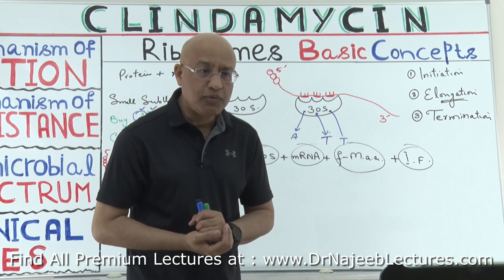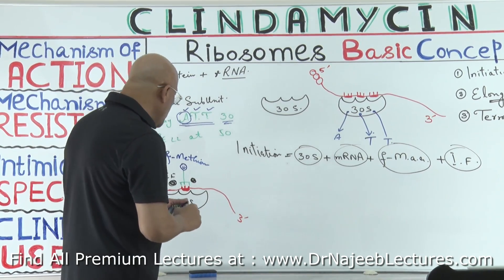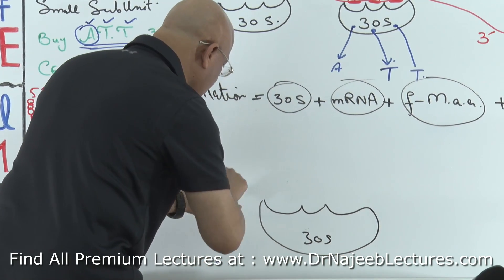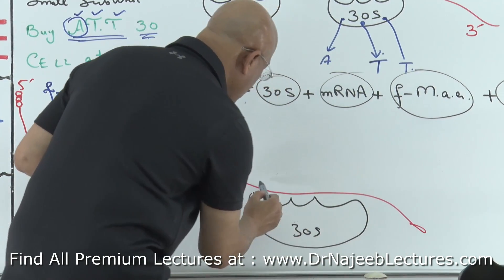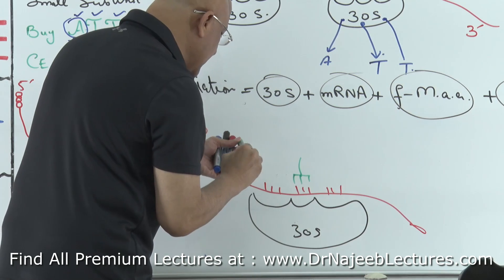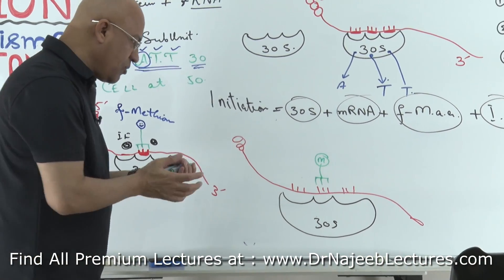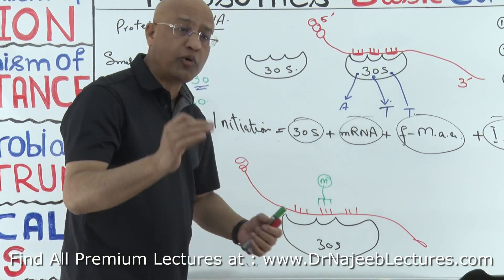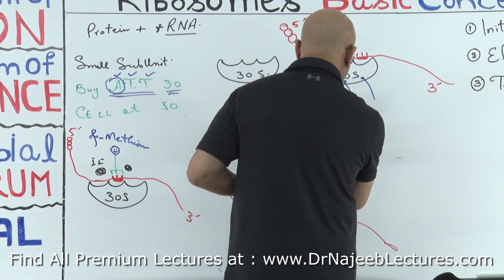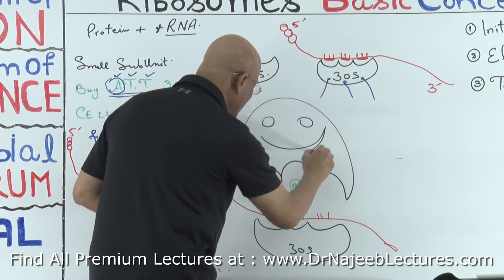If all four components are assembled, we say the initiation complex is formed. Now the big boss will come — the 50S, the big subunit of the ribosome. So the 50S ribosome will now join. We have the 30S subunit, messenger RNA with codons, and the tRNA anticodon carrying formyl methionine — this is the initiation complex — and only then will the 50S come.